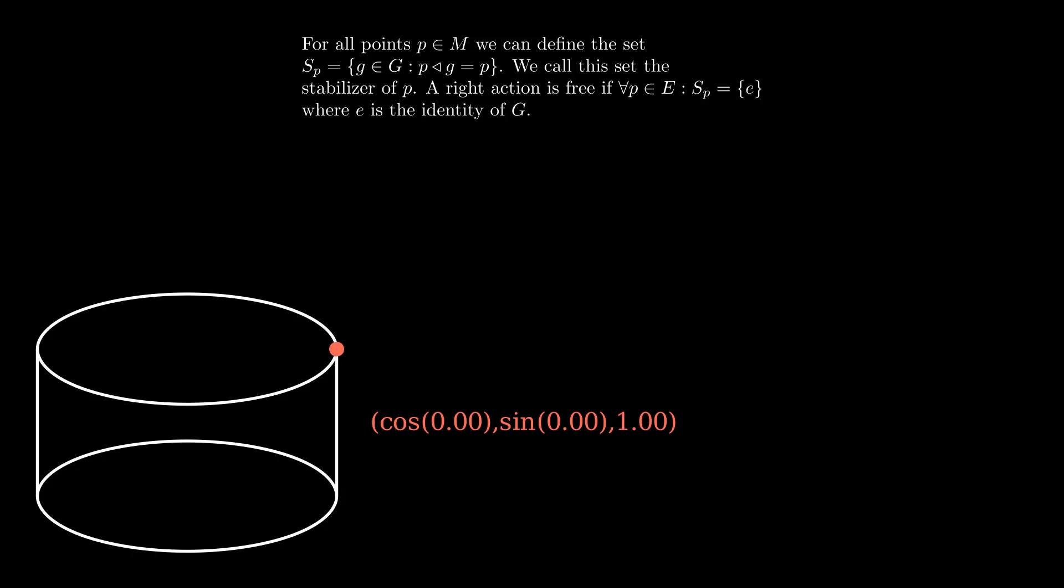Finally, let us do a right action with zero. The point does not move. Meaning zero is part of our stabilizer. In addition, zero is also the identity of the group we choose. Furthermore, what we have shown for this single point holds true for all points on the cylinder. Therefore, we have a free space.